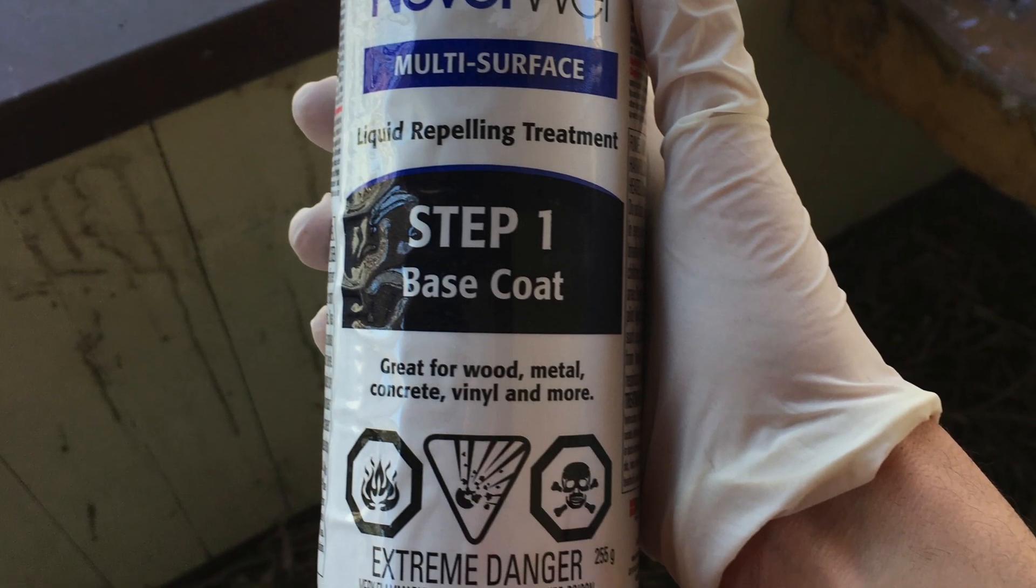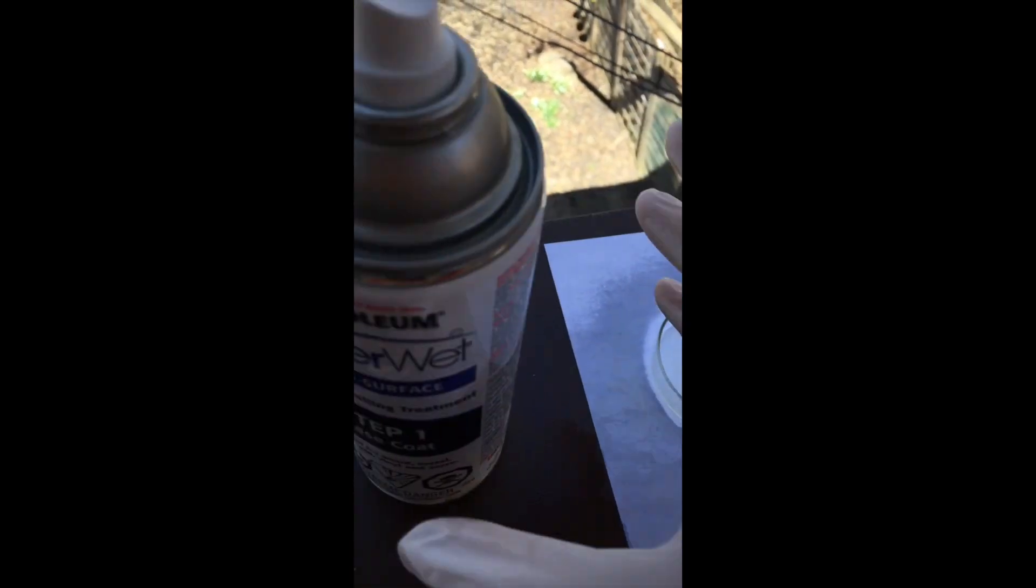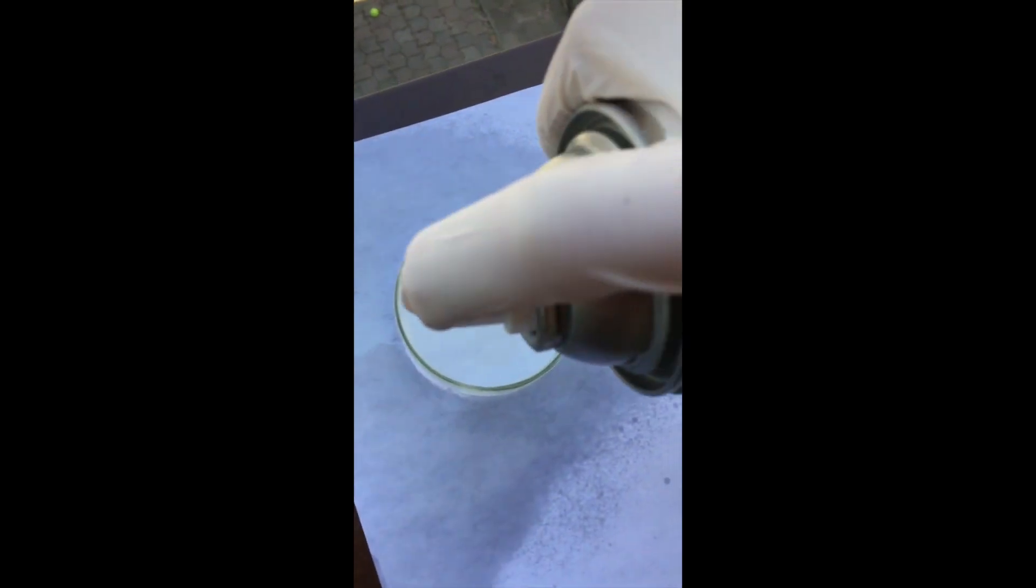I first applied three layers of the base coat. I made sure to rotate the petri dish that I was using for my carrier between each layer of the coating. This is so that I also got a uniform coating on the sides of my petri dish.